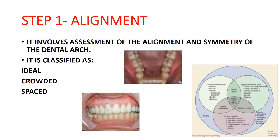There are five characteristics considered in this classification. The first step is alignment — the outermost box in the diagram — which involves assessment of the alignment and symmetry of the dental arch. It can be classified as ideal, crowded, or spaced, depending on whether the dental arch is properly aligned, has crowding, or has spacing present.